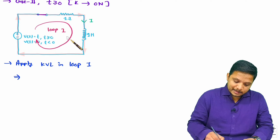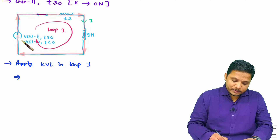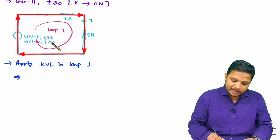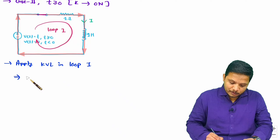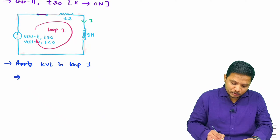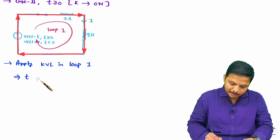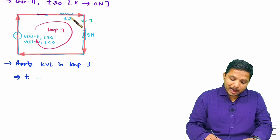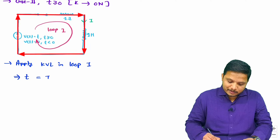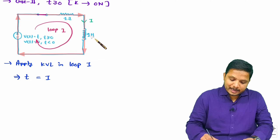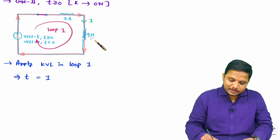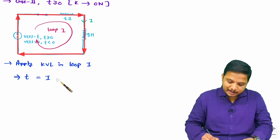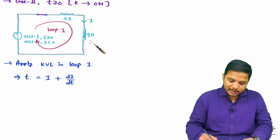In this loop we have a voltage source equal to t for t greater than or equal to 0. Going from minus to plus, I write plus t, and that equals the voltage across the elements. Voltage across the resistance is i times 1, which is just i. Voltage across the inductor is L·di/dt, and since L equals 1, that is simply di/dt.